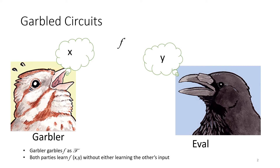In a garbled circuit, the two parties have some function, which I wrote as little f, that they want to compute together, and they also have their two inputs, which I wrote as x and y, and they want to keep these private from each other. The two parties are split into two roles: garbler and evaluator. The garbler is going to garble the circuit and send it over to the evaluator, who can then obliviously evaluate it and in the end decode to learn f of x and y, and nothing else. This output is shared between the two parties.